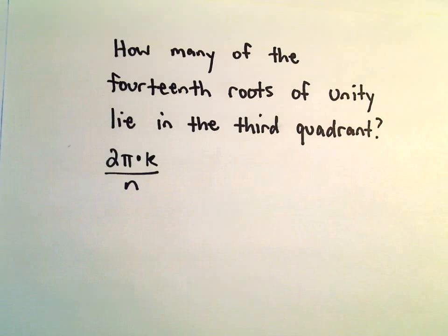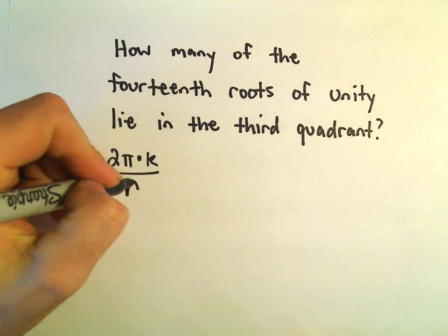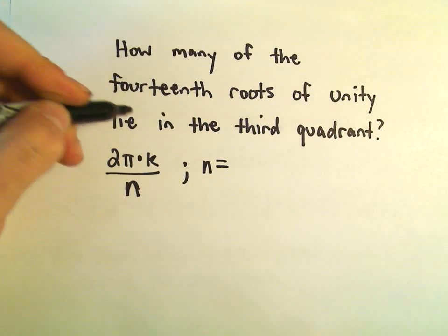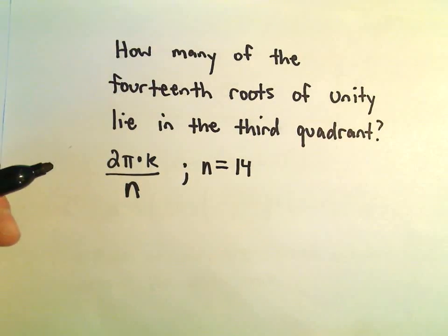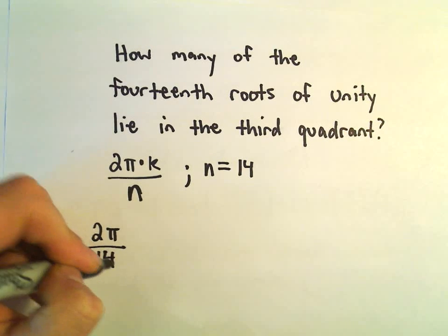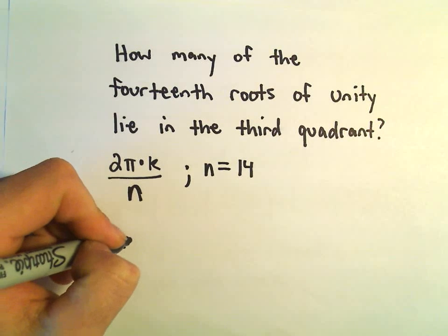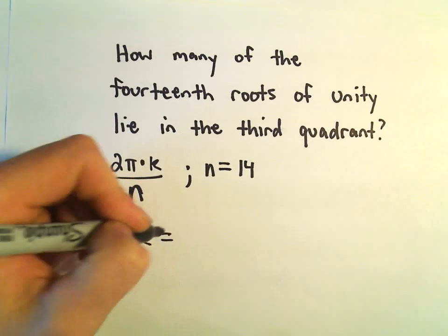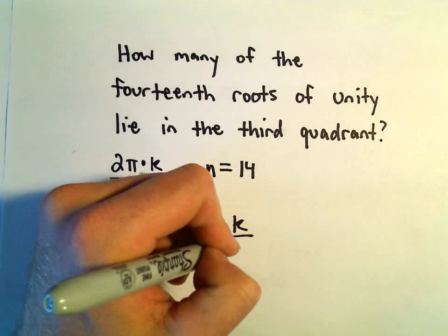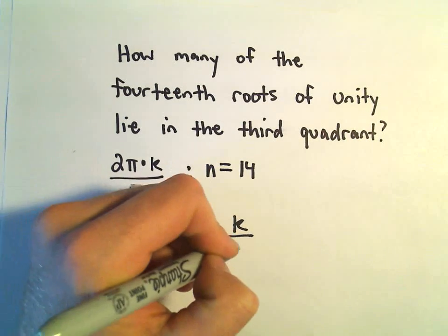So we just have to think about this 2πk over n. Since we're doing the 14th roots, n would be 14. So we've got 2π over 14 times k. I'm going to rewrite that as 2π times k over 14. I just want to move things around here a little bit.